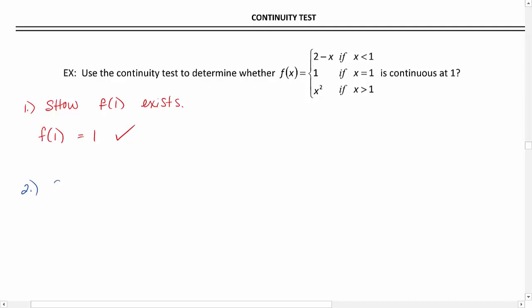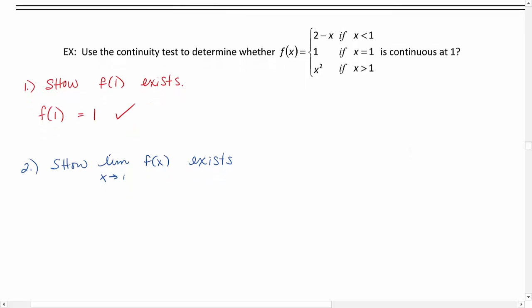The second part of our test, we need to show that the limit as x approaches 1 of f of x also exists. Now, since the value we're approaching in our limit is the x value where our piecewise function breaks up, we are going to have to do a left and a right hand limit, see if those two match, to see whether or not the limit as x approaches 1 exists.